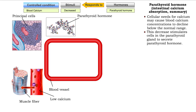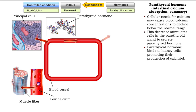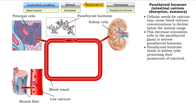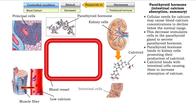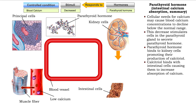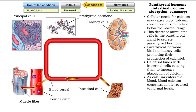Parathyroid hormone also binds to kidney cells and promotes the production of calcitriol. Calcitriol binds with intestinal cells, causing them to increase absorption of calcium, which enters the bloodstream, restoring calcium levels to normal.